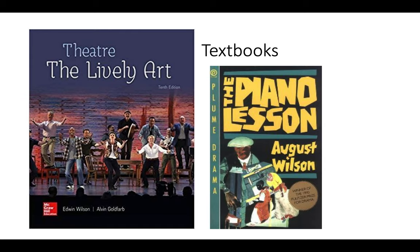Our supplementary text — the play you'll be writing about — is The Piano Lesson by August Wilson. There's also a movie version available on YouTube, but you'll probably need a hard copy because you'll be using direct quotes from the text to support your arguments. Please find a hard copy, whether at a library or by purchasing it — it's not a very expensive play script. Those are the only two textbooks you need for the course. I always have students ask 'do we need the book?' — yes, you need the book.